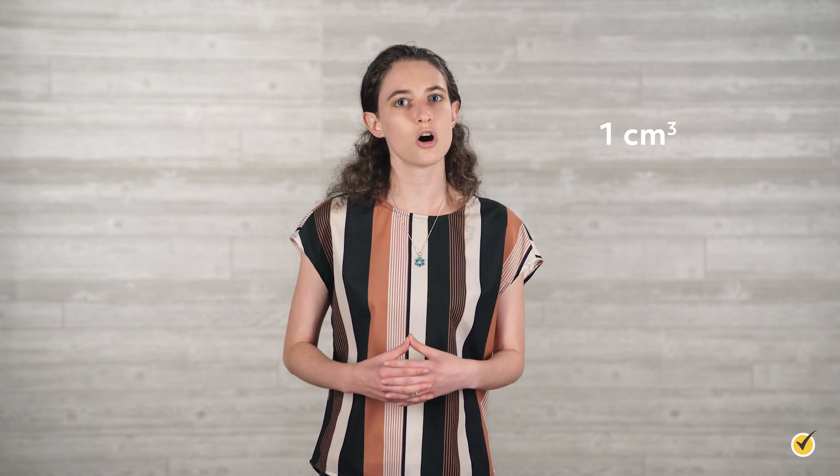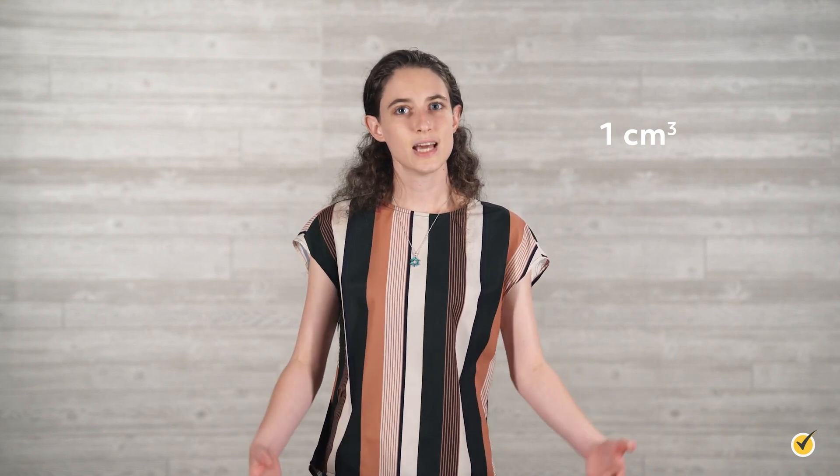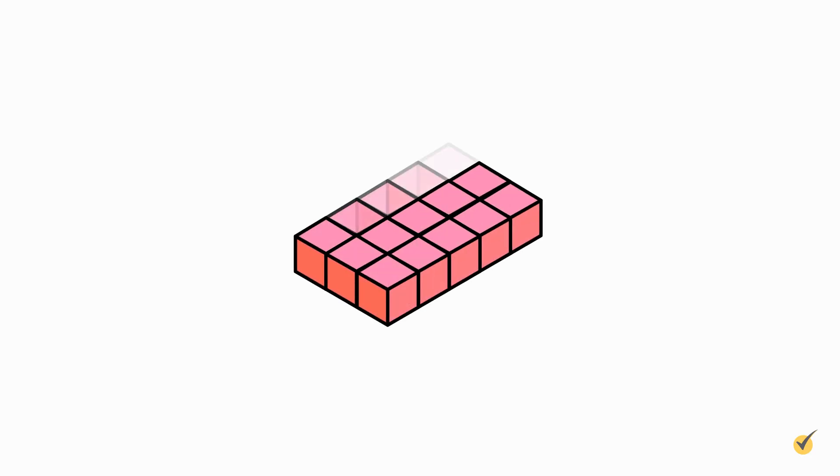Volume is a three-dimensional measure, so it's always in cubic units. Now, let's build a rectangular prism out of the little centimeter cubes. We'll start with the lowest level and arrange them in a 5 by 3 rectangle. At this point, we've used 15 cubes to make our shape, and we have successfully created a rectangular prism.